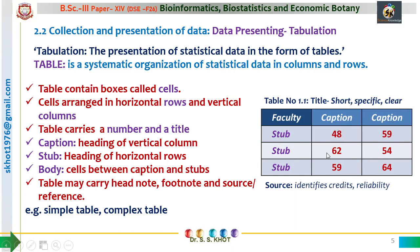The table carries a title, and the title is numbered with a specific number, usually a digit starting from 1. The number of tables present in a single unit may be numbered as 1.1, 1.2 for tables in unit number 1. For tables in unit number 2, we represent them as table number 2.1, 2.2, 2.3, and so on.